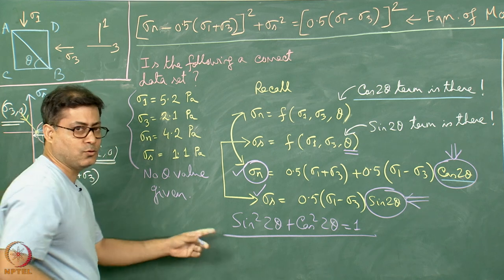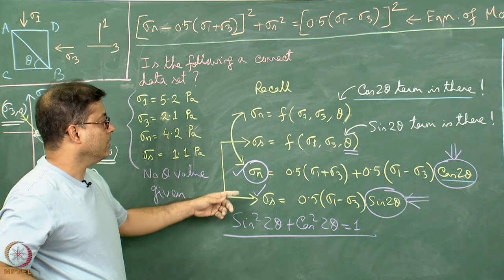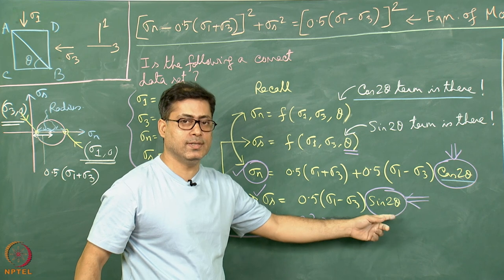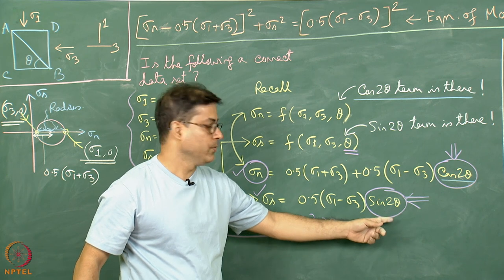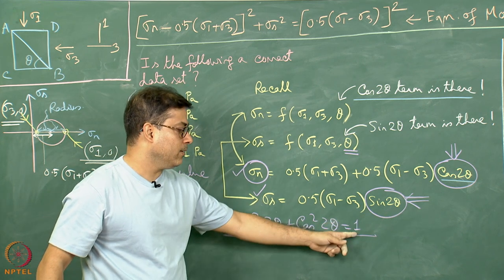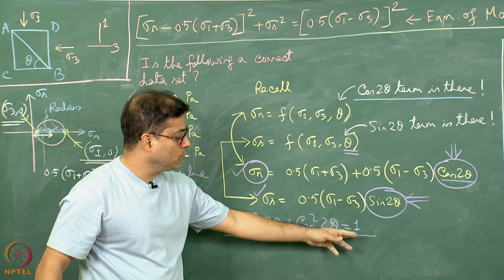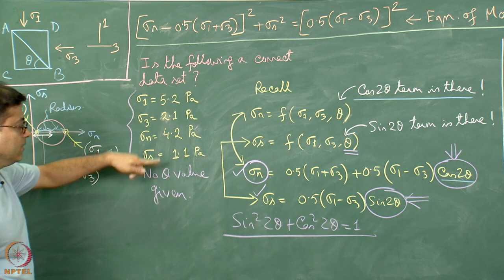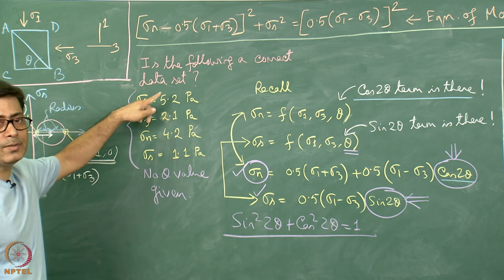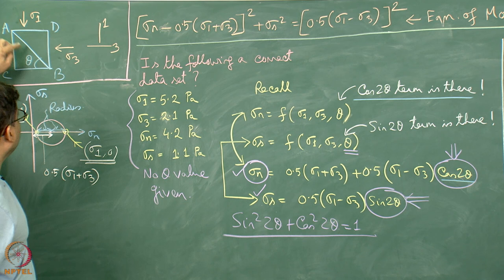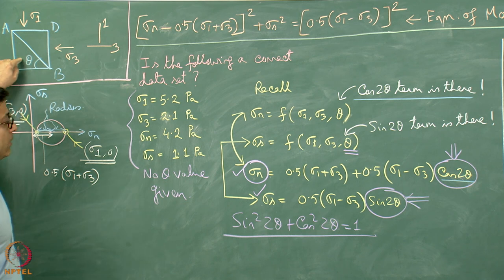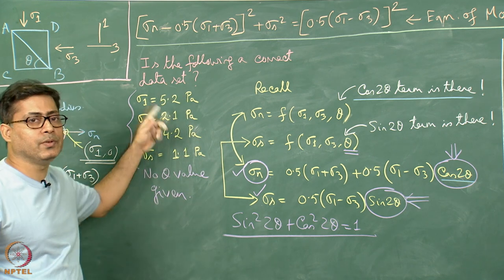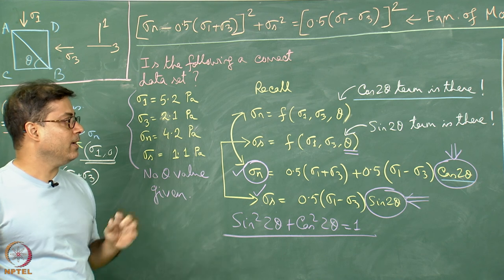There will be a real AB plane with dip theta only if the relationship cos²(2θ) + sin²(2θ) = 1 is maintained. If we square the computed cos(2-theta) and sin(2-theta) values and they do not add up to 1, then this data set is not physically possible — there is no plane of dip theta where these stress relationships hold.